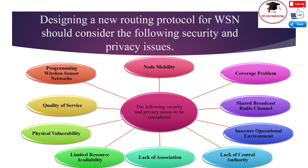Shared Broadcast Radio Channel: Unlike wired networks where a separate dedicated transmission line can be provided between a pair of end users, the radio channel in wireless sensor networks is broadcast in nature and shared by all nodes. Data transmitted by a node is received by all nodes within direct transmission range, so a malicious node could easily obtain data being transmitted. This problem can be minimized to a certain extent by using directional antennas.